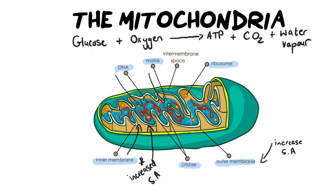Depending on whether you are a little more advanced, I would convert some of these to their chemical equations. If you're more advanced, you need to know that glucose is C6H12O6, oxygen is O2, ATP stays as is, carbon dioxide stays as is, and water vapor is H2O. For those of you who also do chemistry, know that you do not need to use a balanced equation in life sciences.